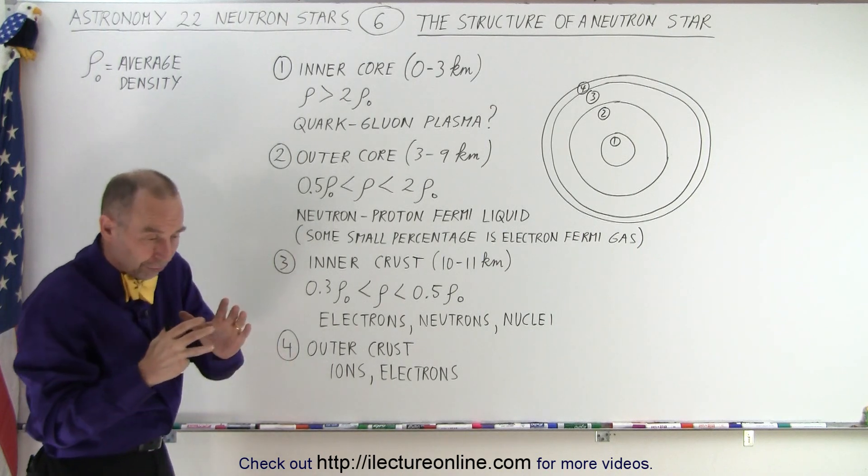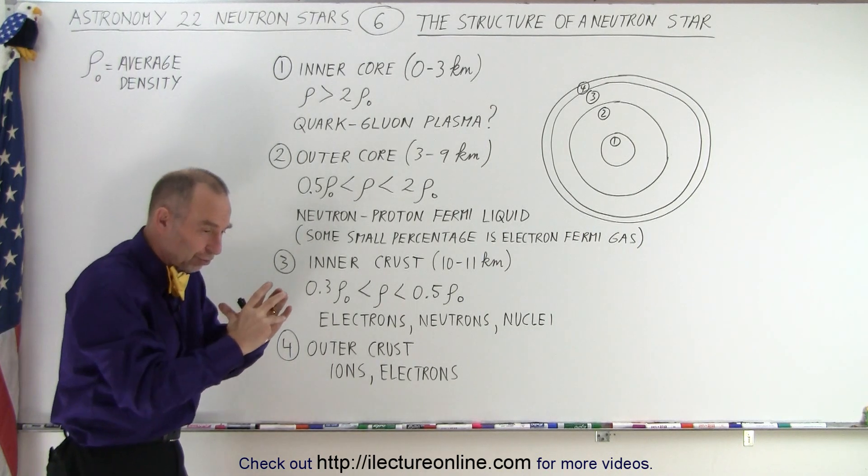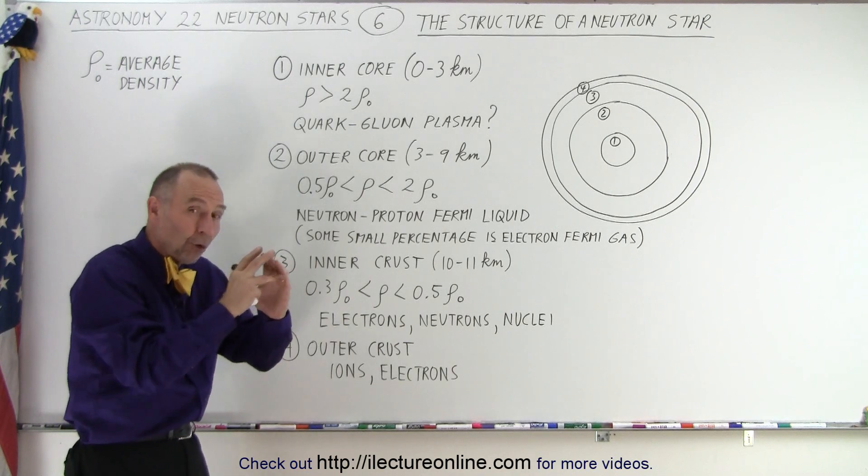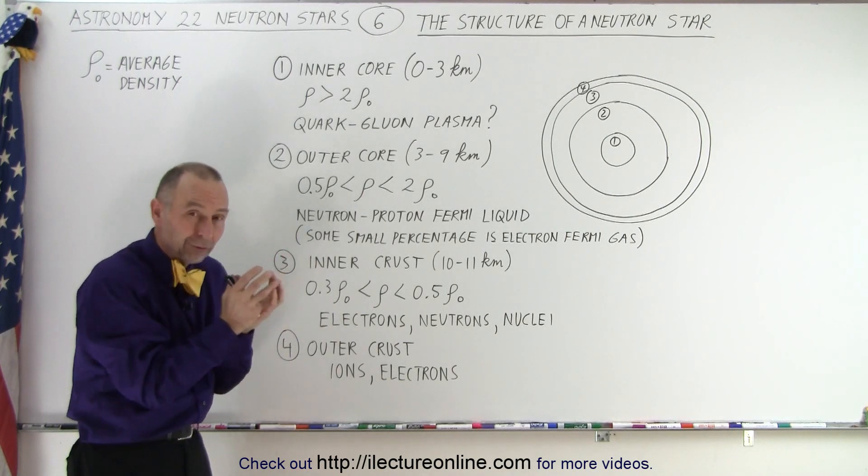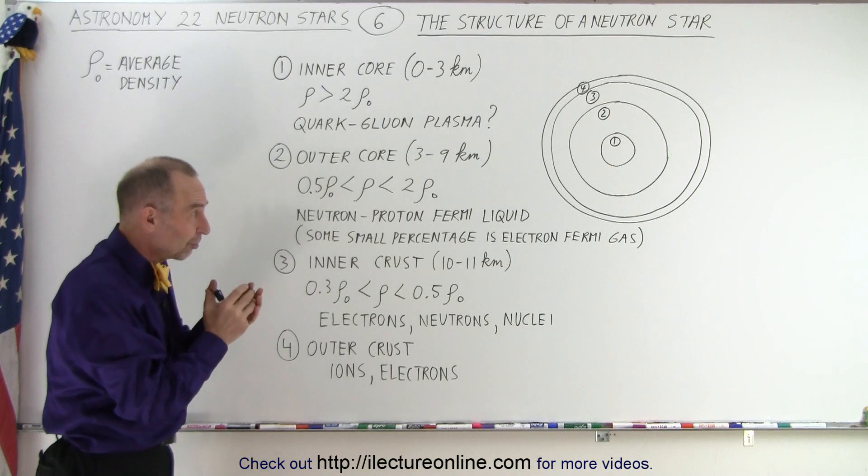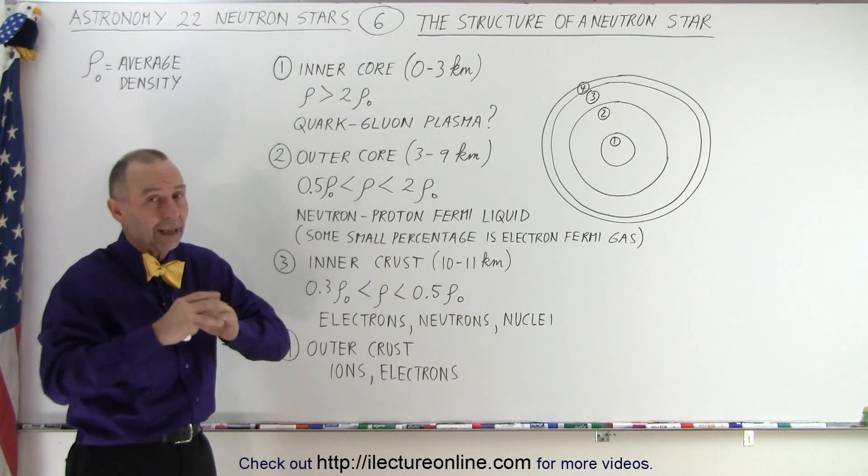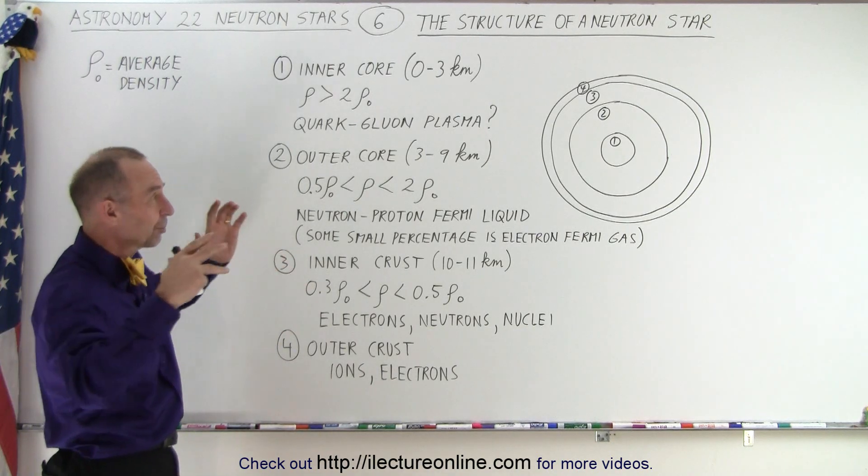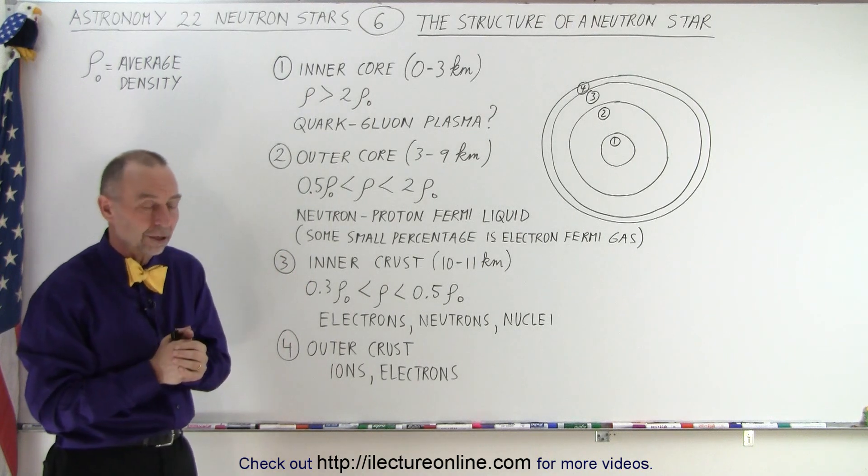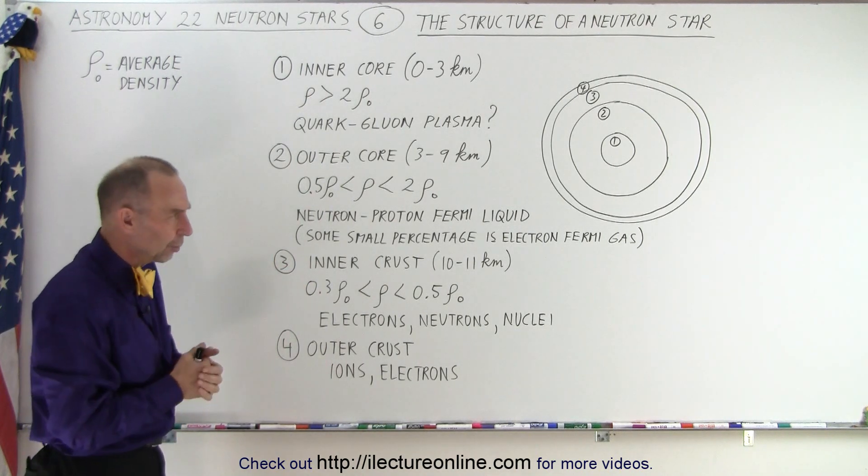So you have the nuclear strong force pushing back, we have the pressure pushing this way, and if the pressure overpowers the nuclear strong force, the very center of the neutron star will actually collapse. And once that collapses, there's nothing that can stop the collapse of the rest of the neutron star. It simply disappears into what we would call a black hole.